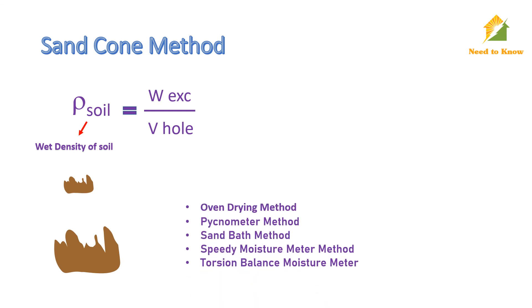We can calculate the dry density of excavated soil using this formula, where rho is the wet density of soil and Wc is the water content of that soil.